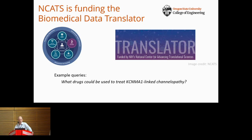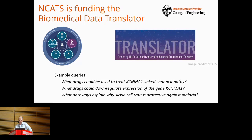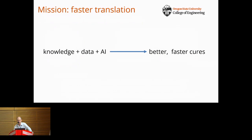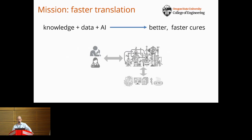Some example translational questions might be: what drugs could be used to treat KCNMA1-linked channelopathy, a rare disease? What drugs could downregulate expression of the gene KCNMA1? Or what pathways explain why sickle cell trait is protective against malaria? A benchmark for success for the project would be if it provides insights that could not be obtained by just a Google, PubMed, UpToDate, or ChatGPT query.